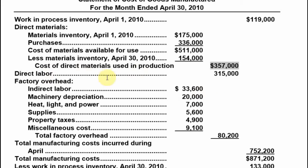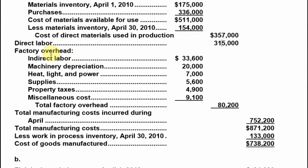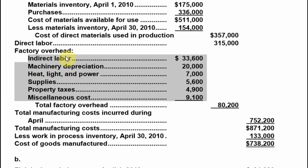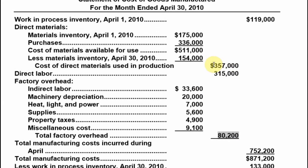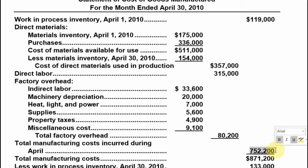This three hundred fifty seven thousand is the direct material that goes into work in process. We also have direct labor, which is a given number provided for you. For factory overhead, we include indirect labor and indirect material. Adding direct labor and factory overhead together, we get eighty thousand two hundred.